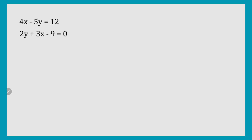Moving on to a slightly more tricky example, but in principle it's still exactly the same. I'm going to label this as equation 1 and equation 2, then rewrite equation 2 in standard form: 3x plus 2y equals 9. Now we can look at the x's — in the first equation we have 4x, and in the second we have 3x.